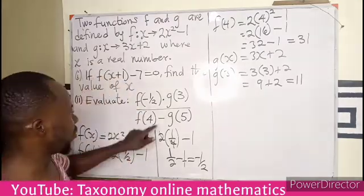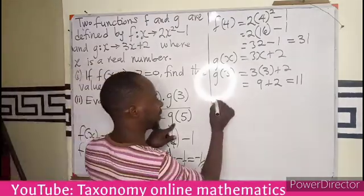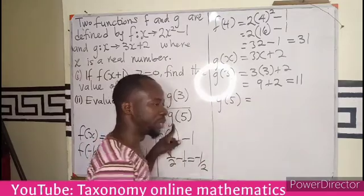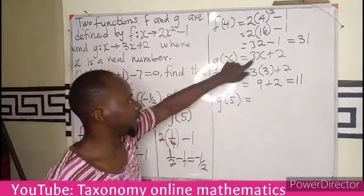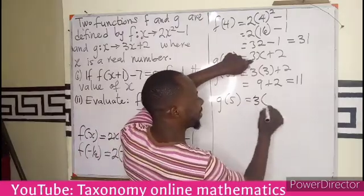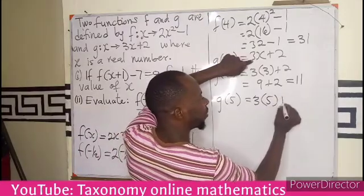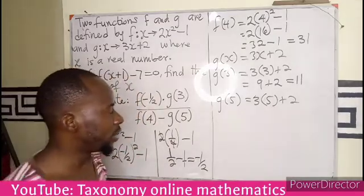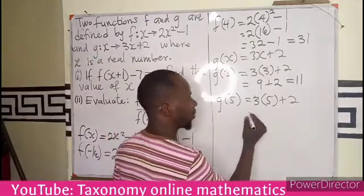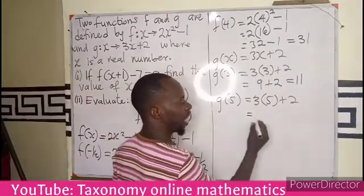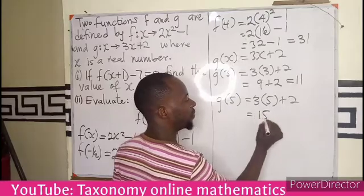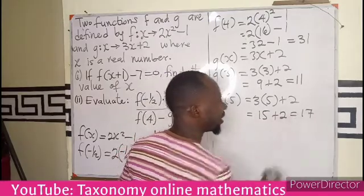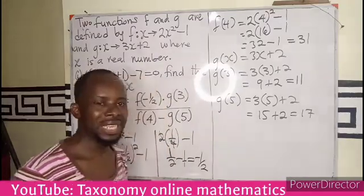Now we move to g of 5. The relation is still 3x and my x is now 5 plus 2. If I multiply: 3 times 5 is 15 plus 2 equals 17.